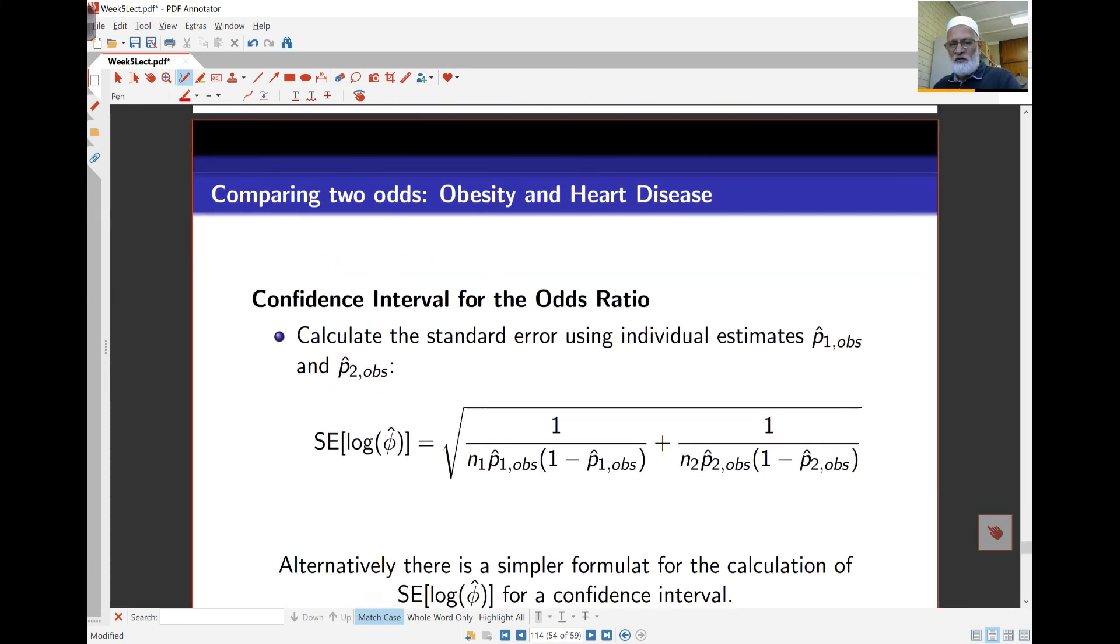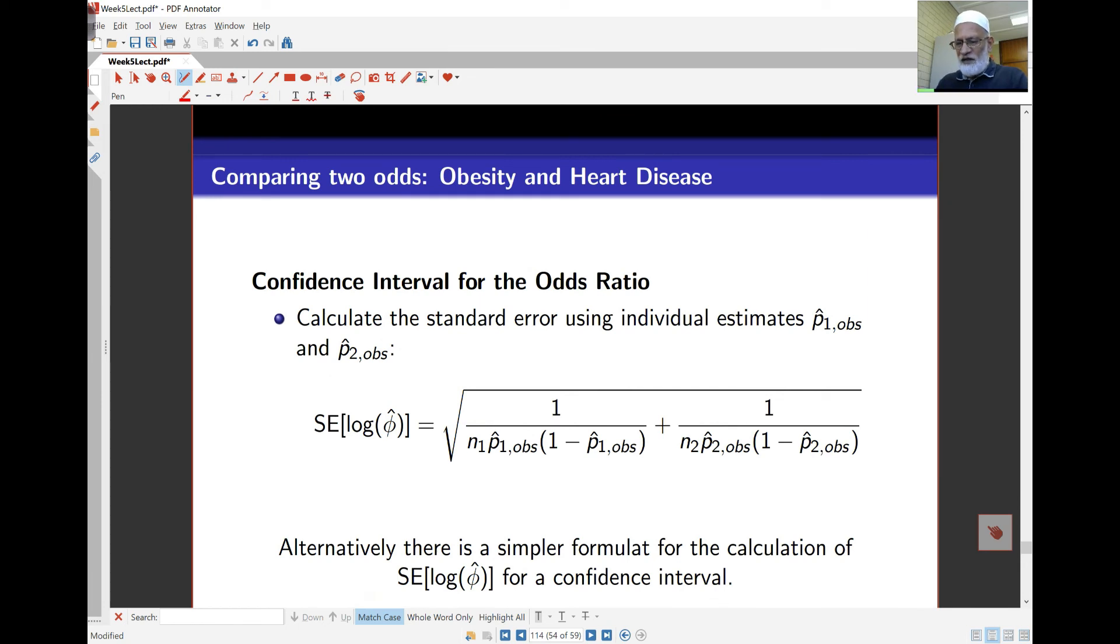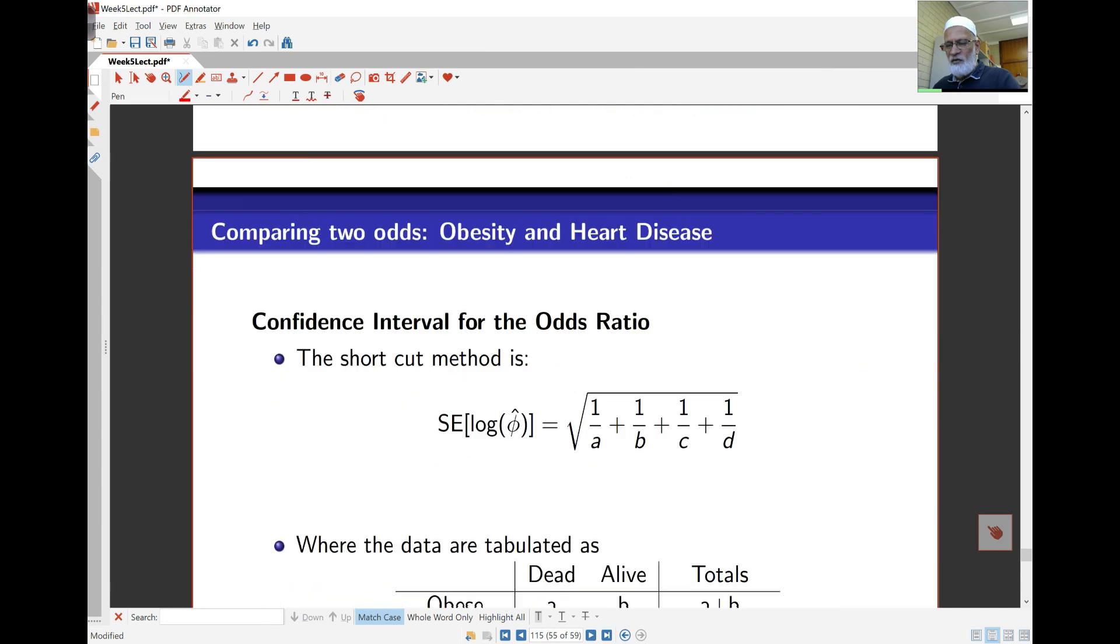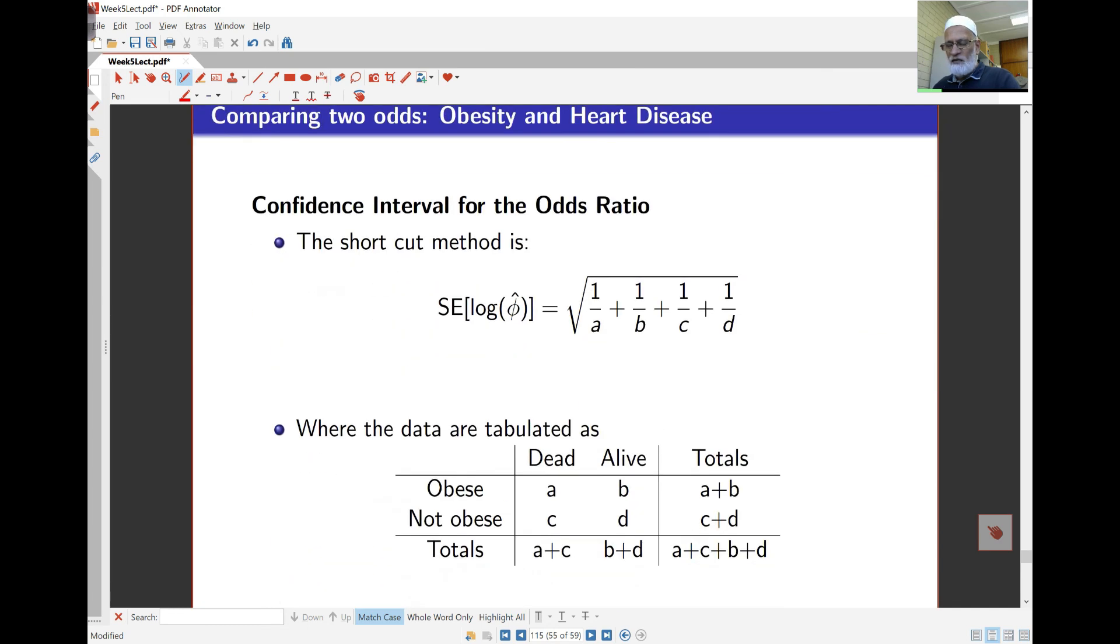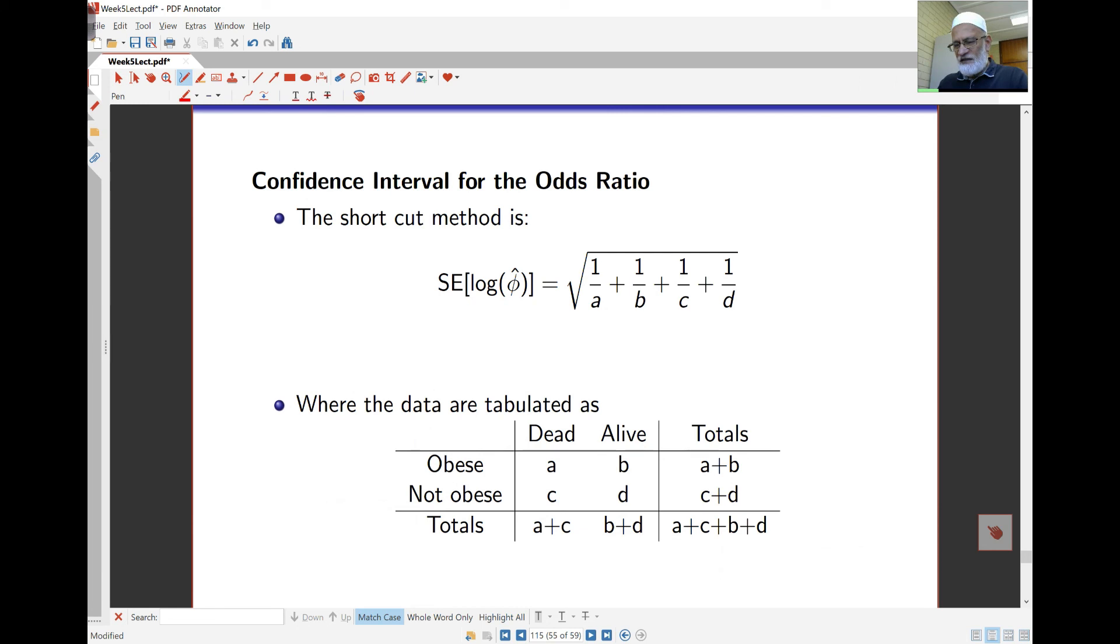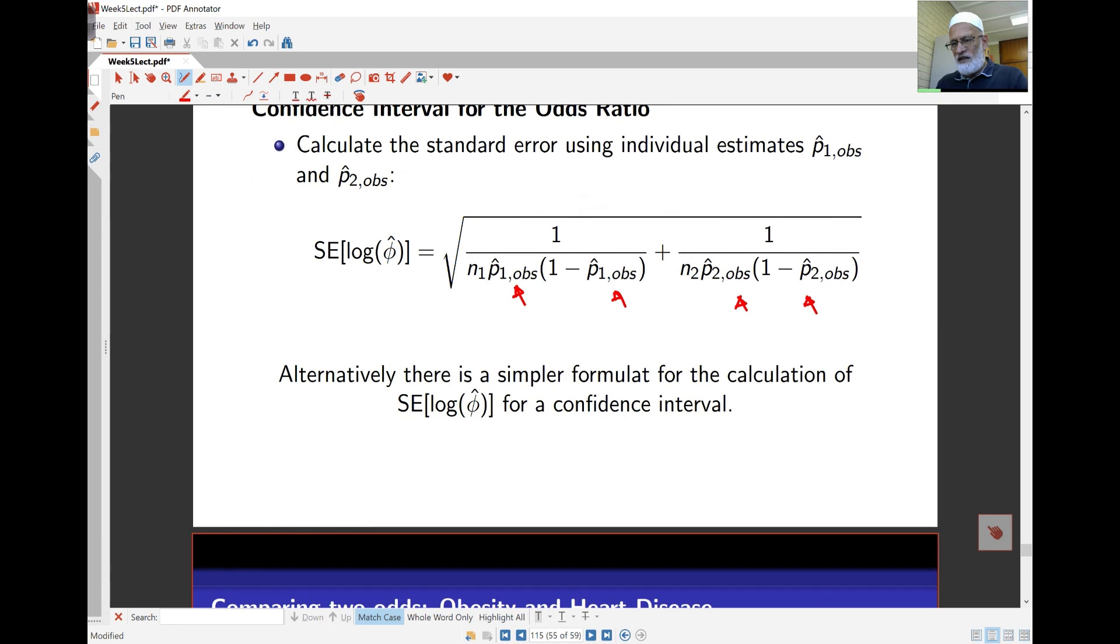Confidence intervals: the same problem arises. I can't use the overall probability here. I'm going to use the probabilities for each of those populations. And we can calculate the standard error like that. But actually it's simpler. The formula is just 1 over a plus 1 over b plus 1 over c plus 1 over d. So it's just the sum of the reciprocals of each of these numbers in the cells that I've got here. That gives you the standard error, after taking the square root, the standard error of log of phi hat. So it's much easier to calculate that than by using this particular formula here.